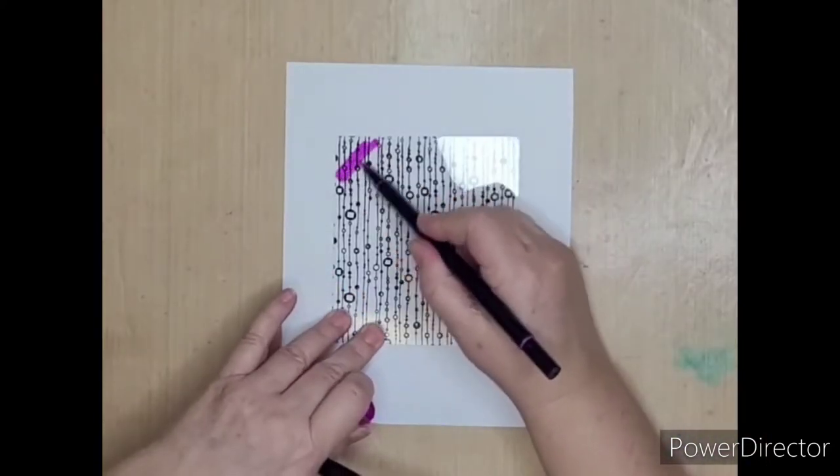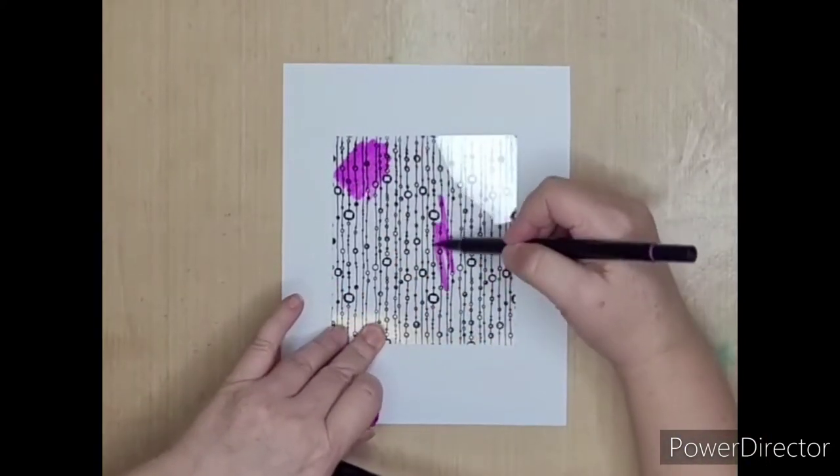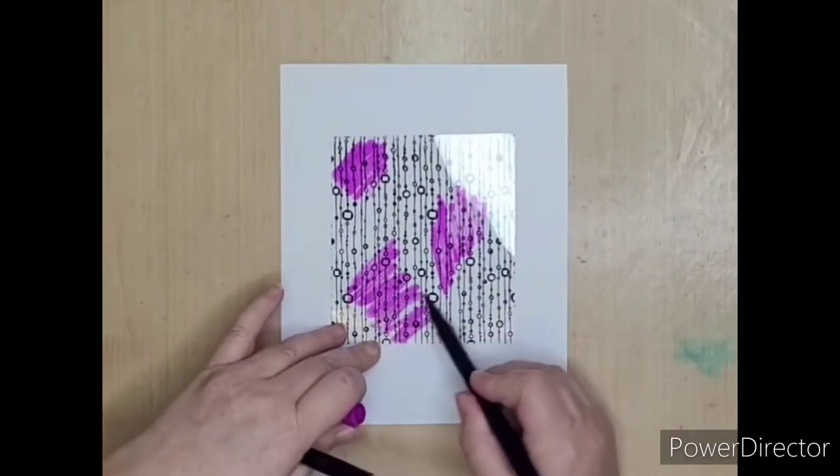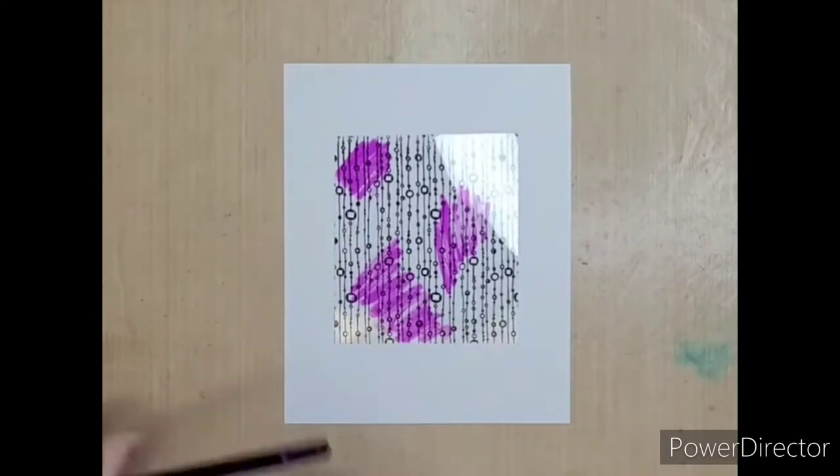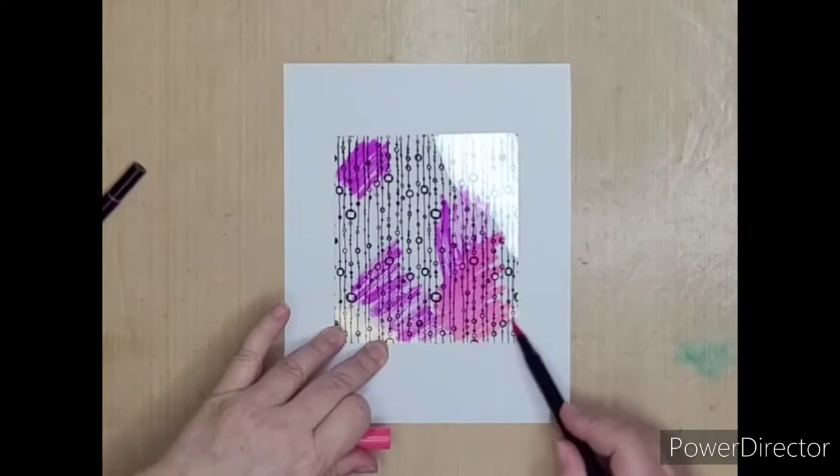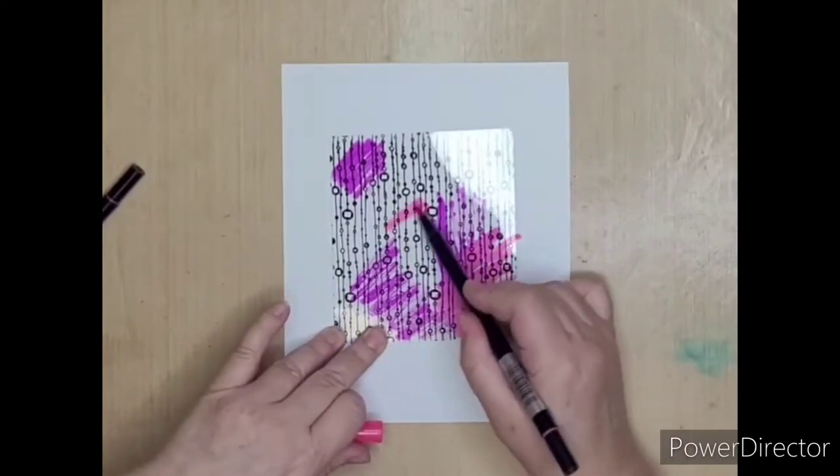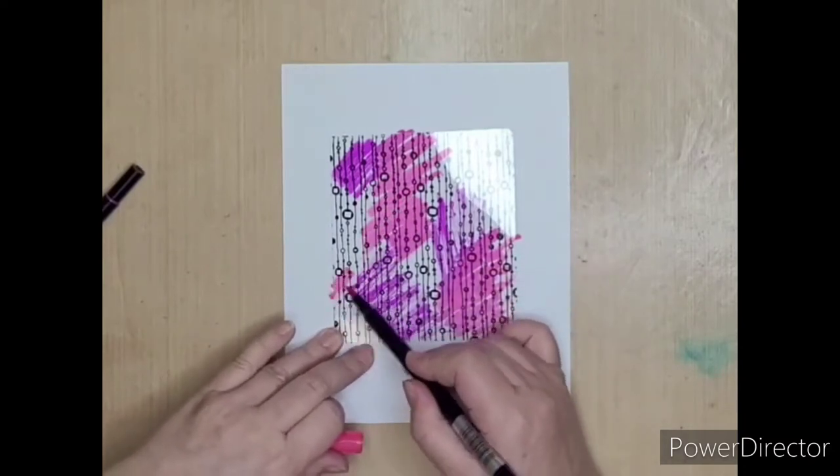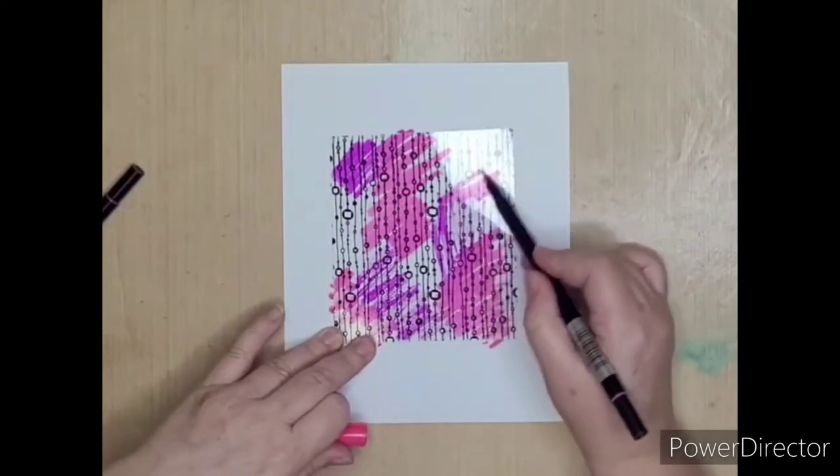Once you've given it a few minutes to dry, we then color straight onto the back of the acetate with some water-based pens. We're using a purple, a pink, and a little bit of yellow. You're just scribbling onto the plastic, covering as many areas as possible. You will see some pooling with the colors, but don't worry, the color is still there.